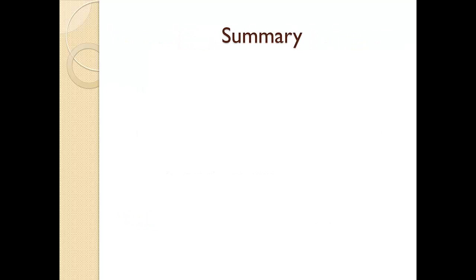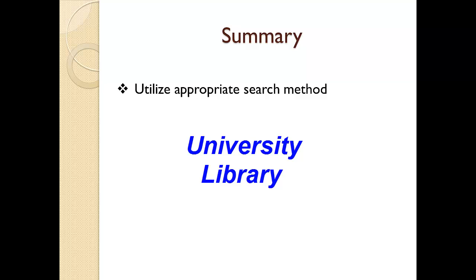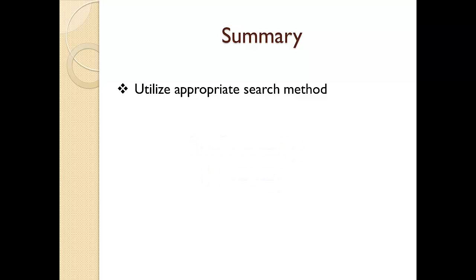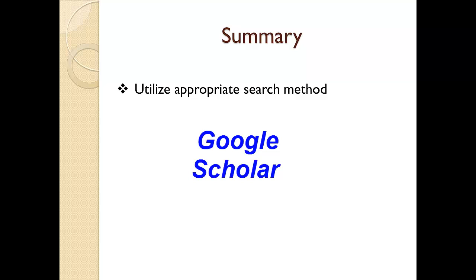I want to conclude this lesson by providing some quick tips as a summary of what we covered to assist you in determining whether a resource is scholarly in nature. First, I recommend beginning by using a search method that will limit your results to scholarly resources. For example, if you have access to an online university library, this is a great place to begin. The information you find through the university library will usually be from a scholarly source. Another great search tool is Google Scholar.